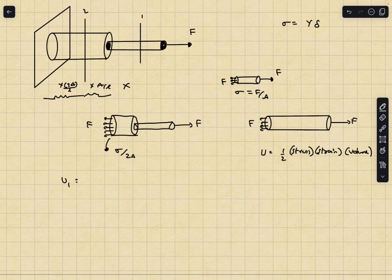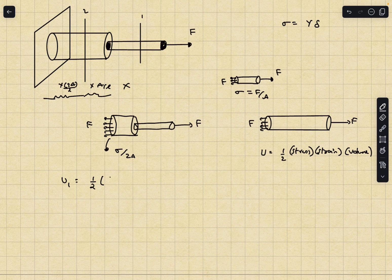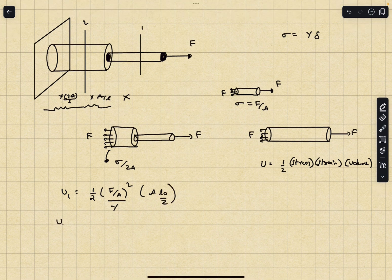Let's call the potential energy stored in rod one as U1. This is going to be half stress. The stress is simply F by A in this case. I'm going to write strain as stress divided by Y because I can use Hooke's law here. So this would be simply stress squared divided by Y. The volume of the rod is simply going to be A multiplied by L0 by 2.